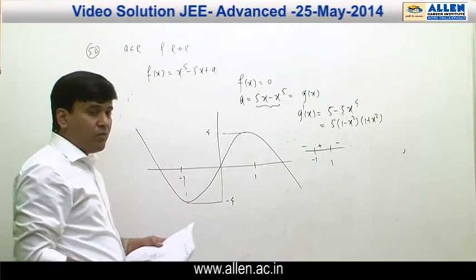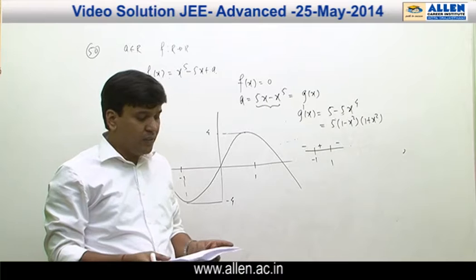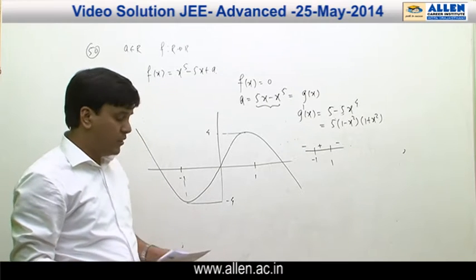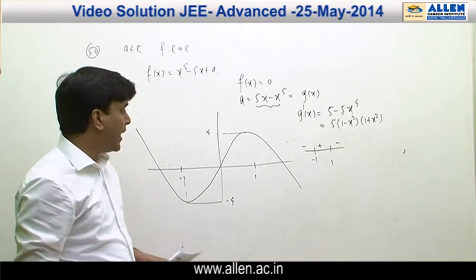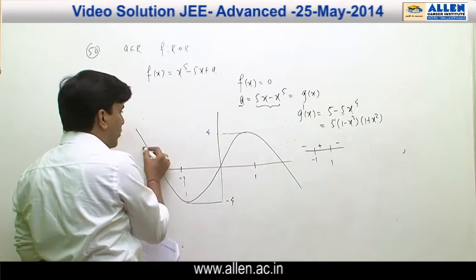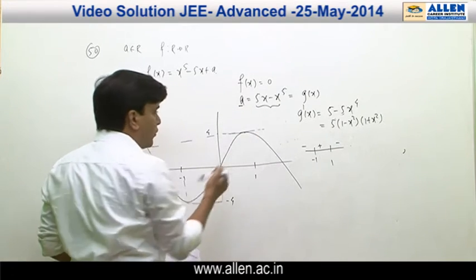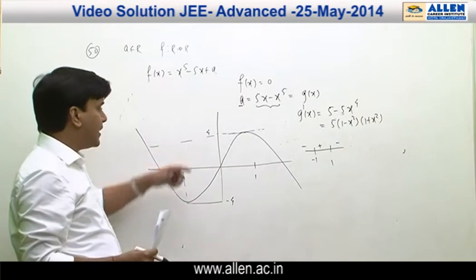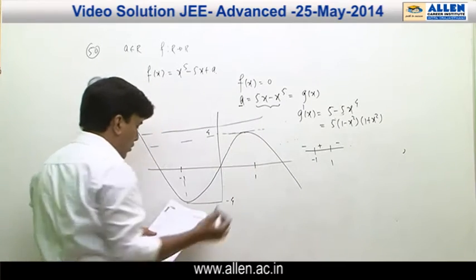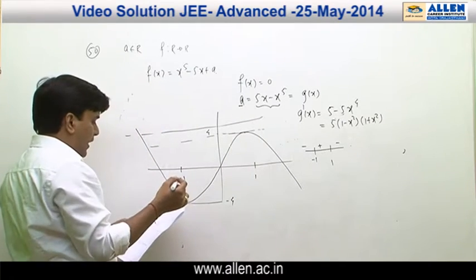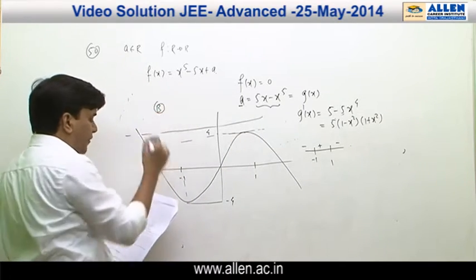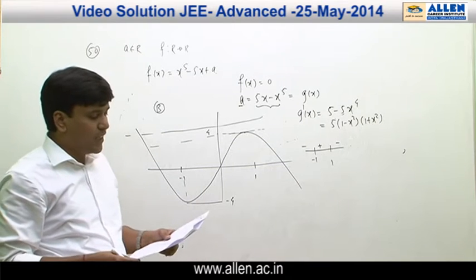Reading out the different options: the first option says f(x) has 3 real roots for a greater than 4. If we take a greater than 4, we can clearly see the number of real roots is going to be 1. So the correct answer is option B, which says f(x) has only 1 real root if a is greater than 4.